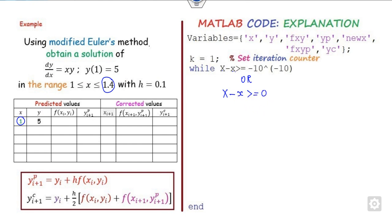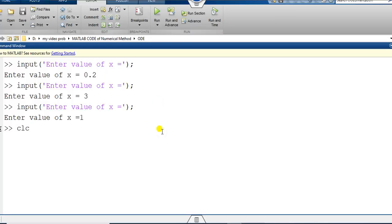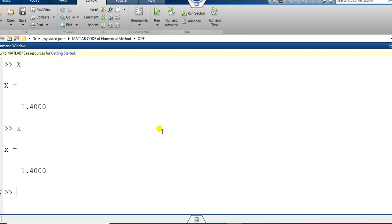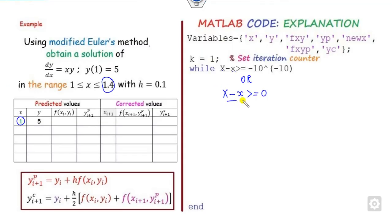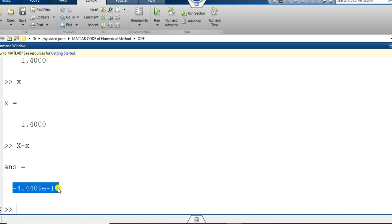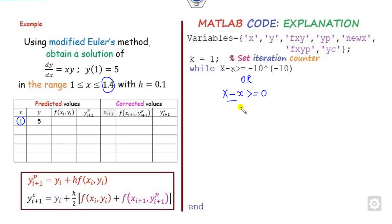If you write x = 1.4 and capital X = 1.4, you might expect their difference to be exactly 0, but you can see the difference will not be 0 because of internal floating point representation — there is a very small number like 10⁻¹⁶ with a negative sign. So whenever you write 'greater than or equal to 0', it will not satisfy the condition and the process will terminate one step before. That is why I write a tolerance of 10⁻¹⁰, or any number just slightly less than the difference on that side.